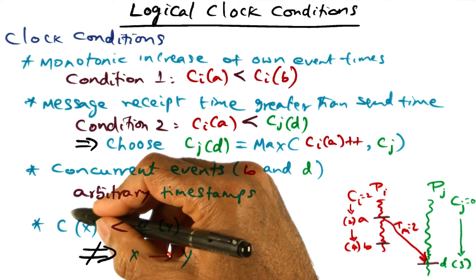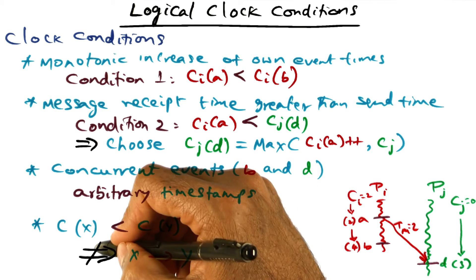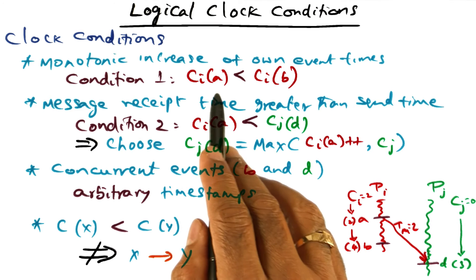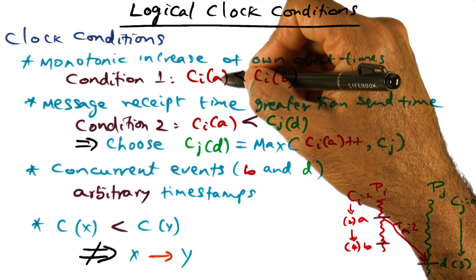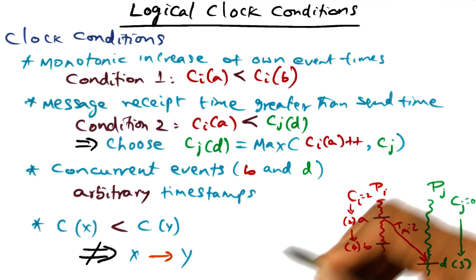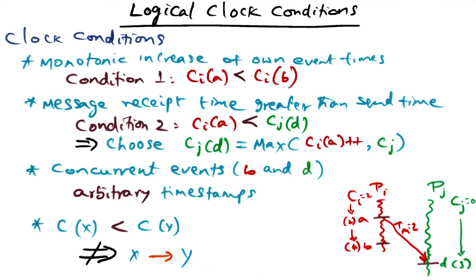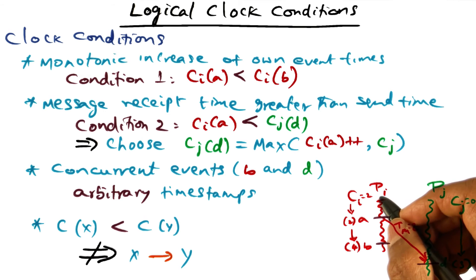Just because we find that there is an event X which has a time stamp that is smaller than the time stamp associated with another event Y, doesn't mean that X happened before Y. While the condition that if event A happened before B we must ensure the time stamp of A is less than the time stamp of B is important, the converse is not true. If the time stamp of event X is less than the time stamp of event Y, that does not mean X happened before Y. This is very, very important.